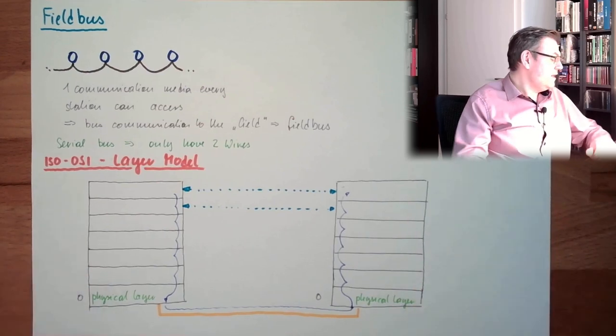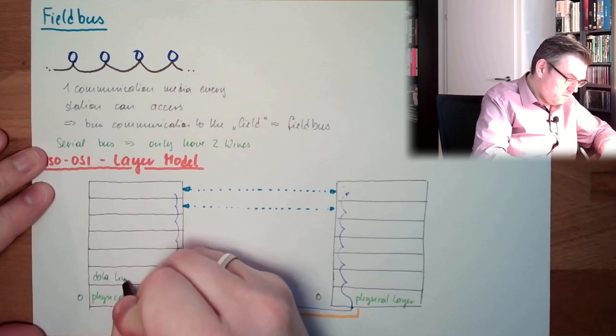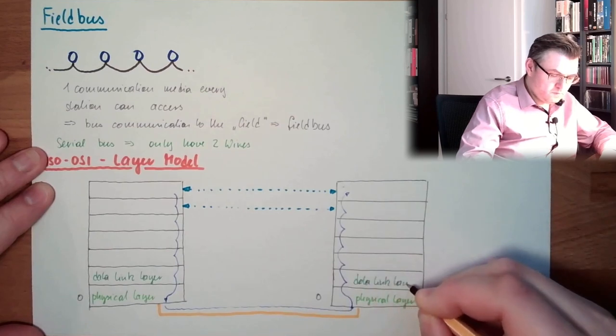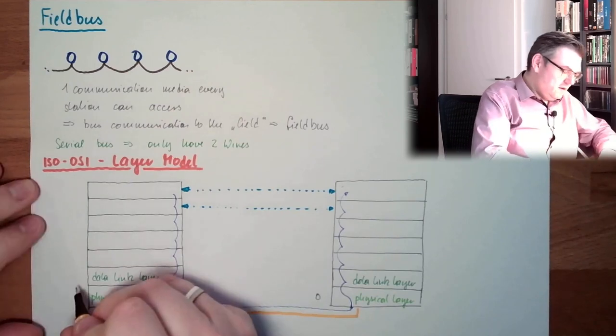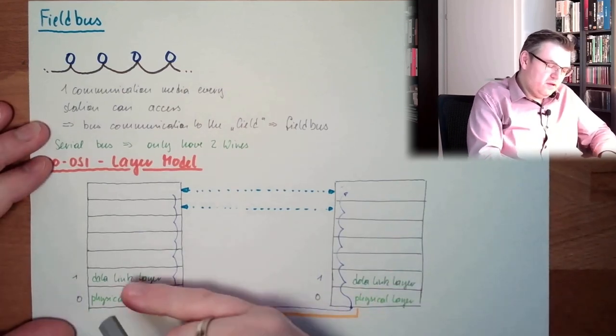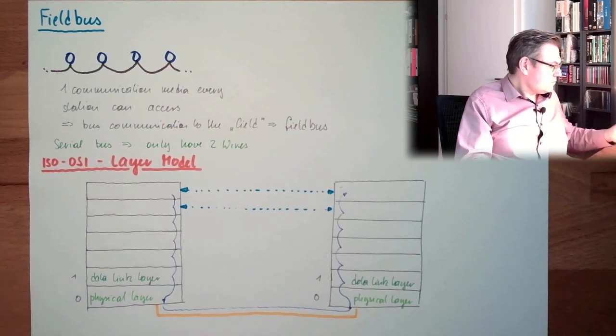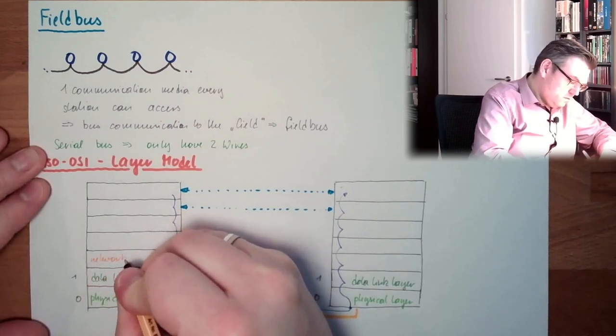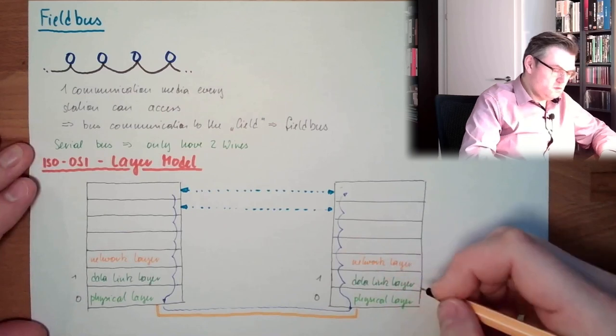The above layer - that's the link layer or the data layer. This ensures that the physical layer is not making mistakes. It checks if the communication was correct. This makes already some packages. The next layer would be the network layer.